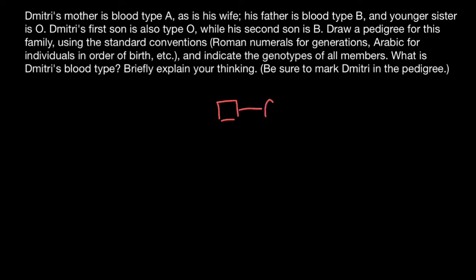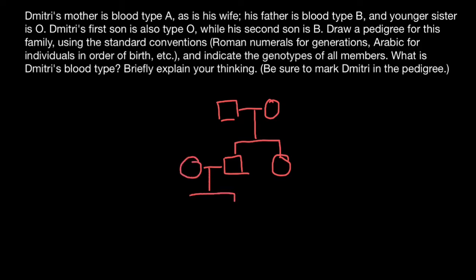So Dmitri is here — his father, his mother. We know that Dmitri has a sister, so here is his sister. Dmitri is married and they have two boys: his first son and his second son. This is the full pedigree of this family. Be sure to mark Dmitri on the pedigree.